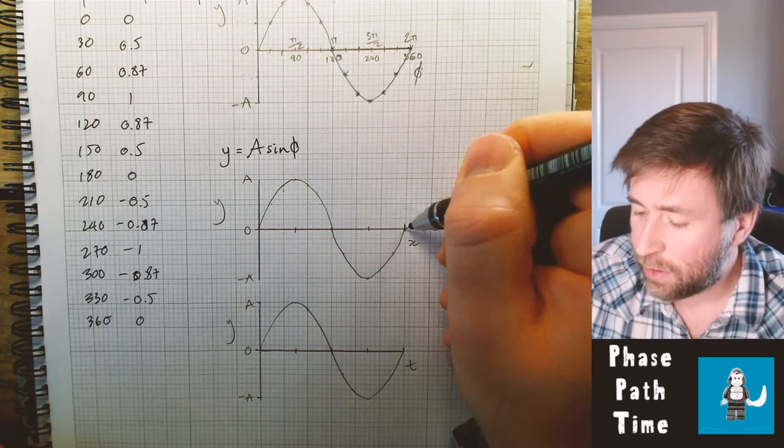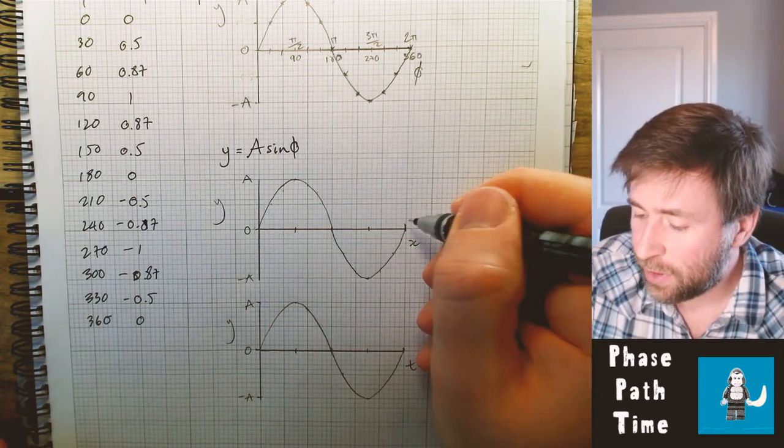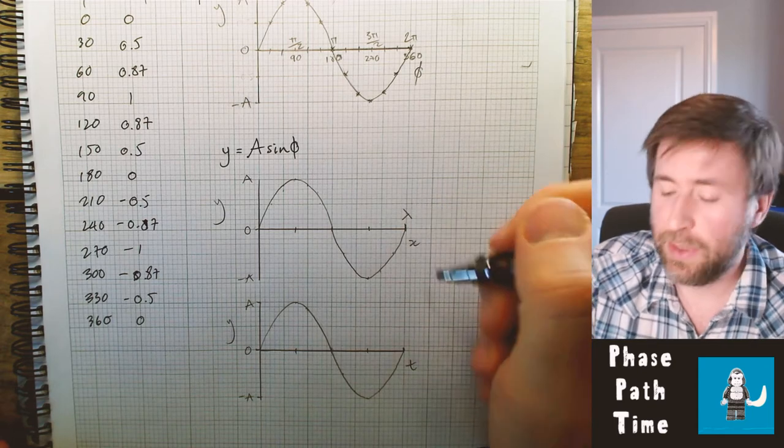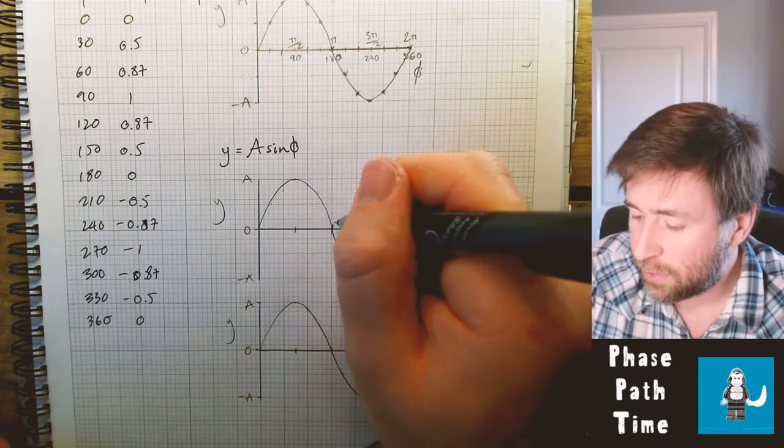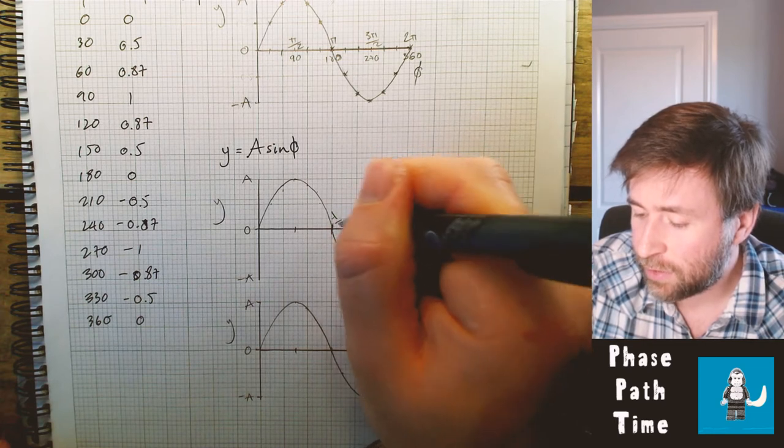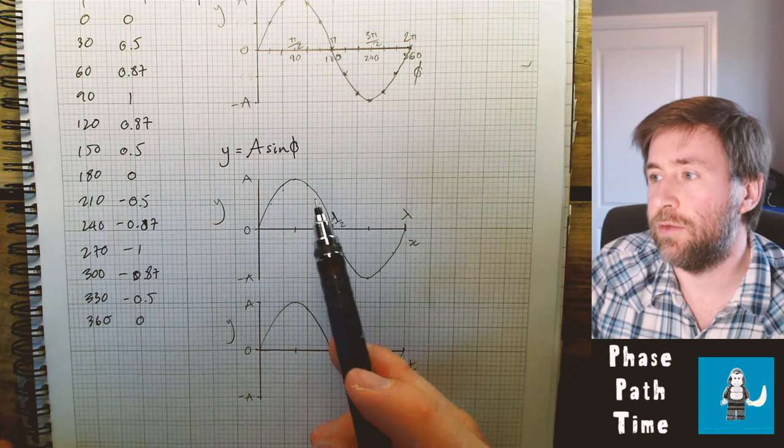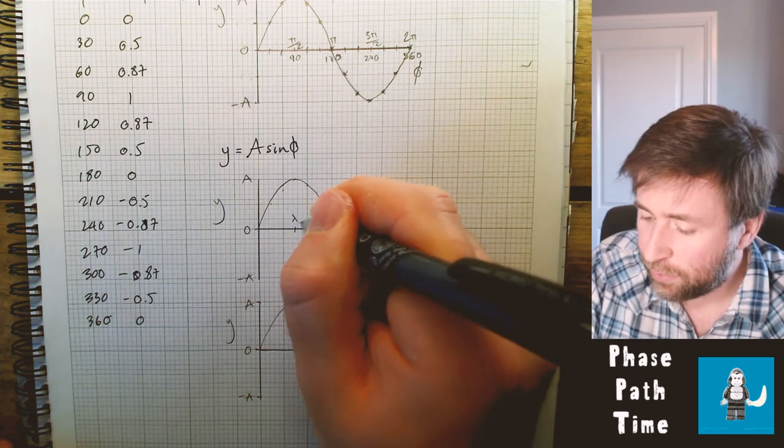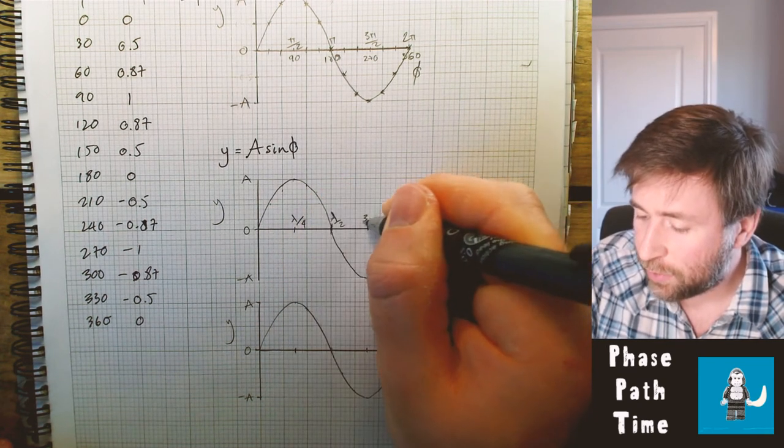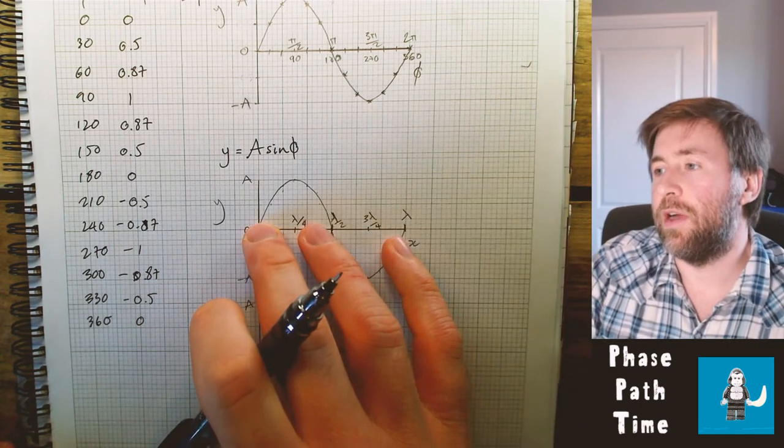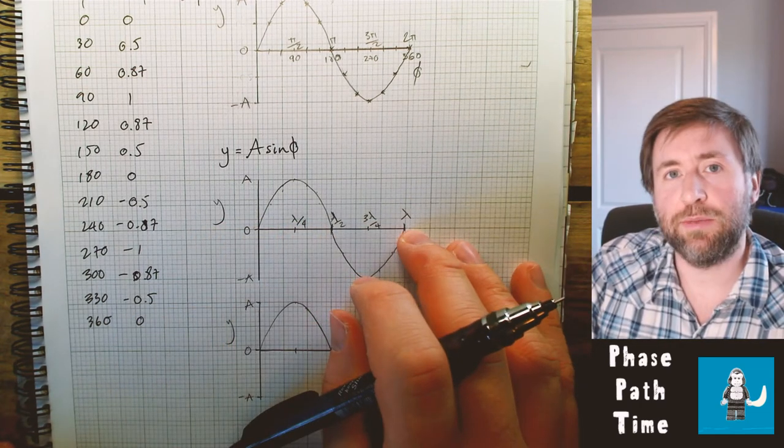Now this here is the length of one full wave. So this is a wavelength. And this point here is half the wavelength. So this is lambda over two. That displacement at that point there is lambda over two and so on and so forth. This would be lambda over four. And this would be three quarters lambda. So we have then a graph now of displacement versus displacement.